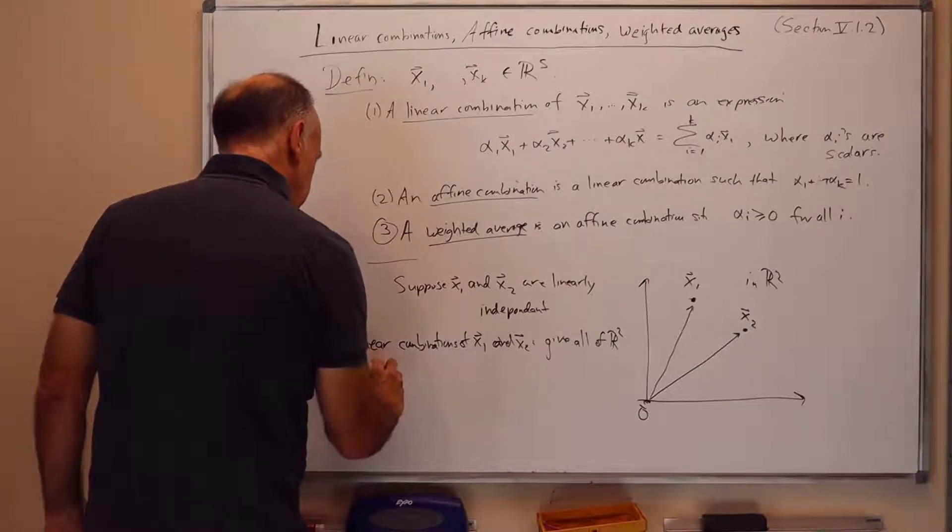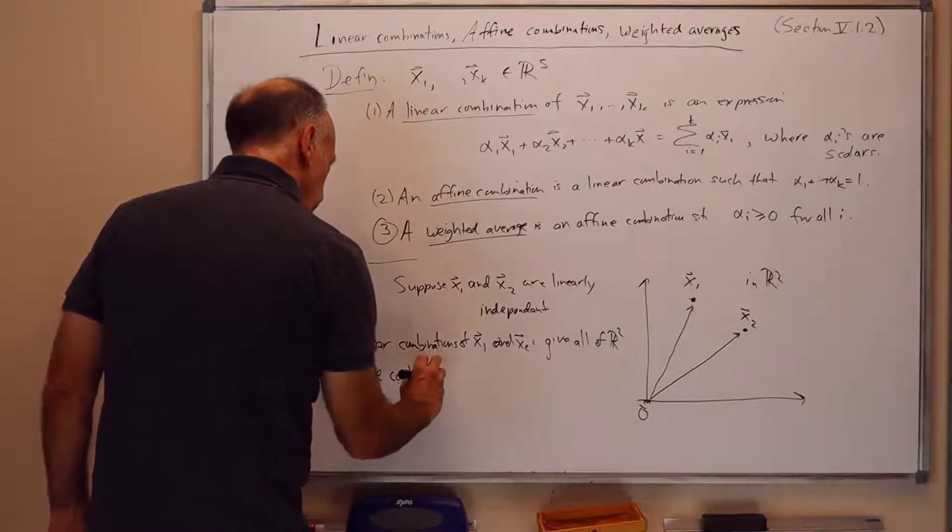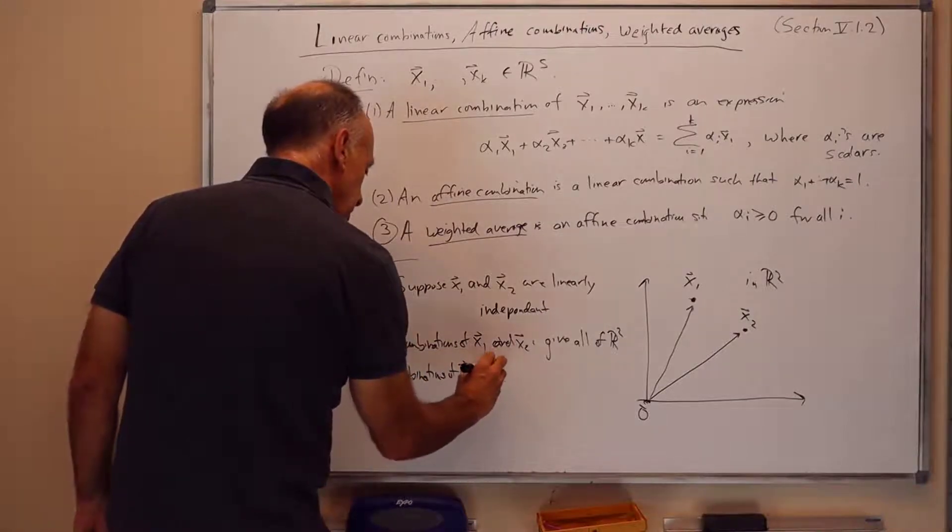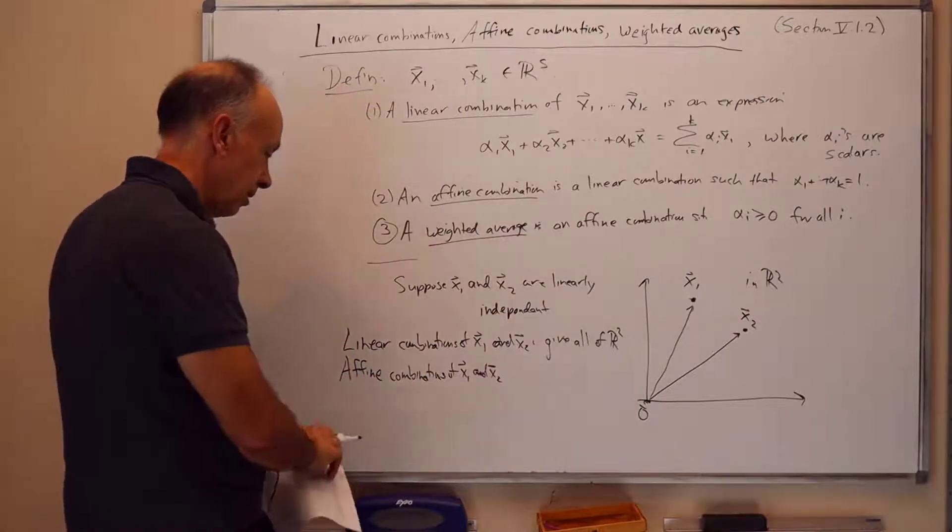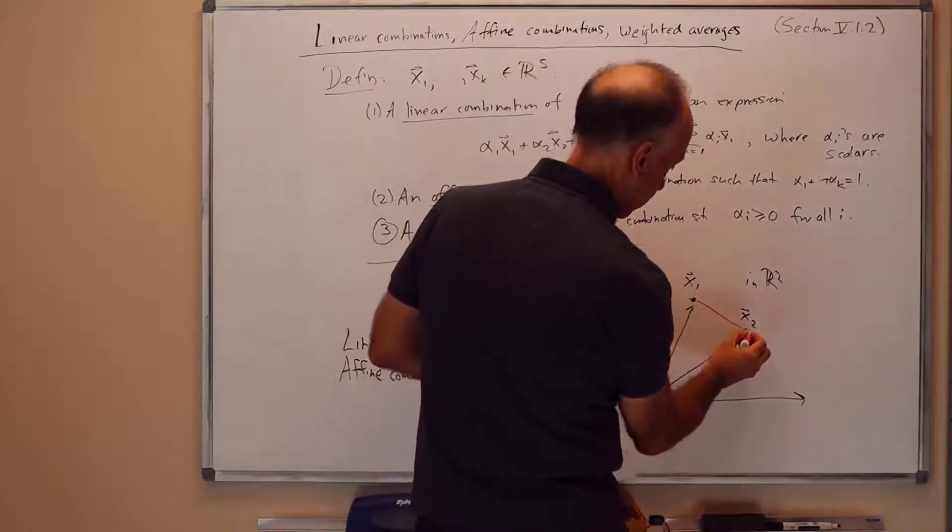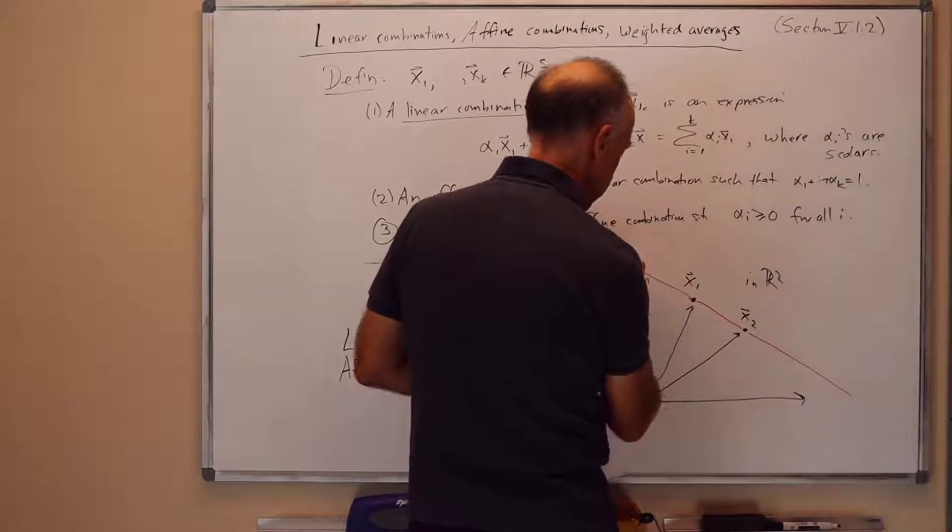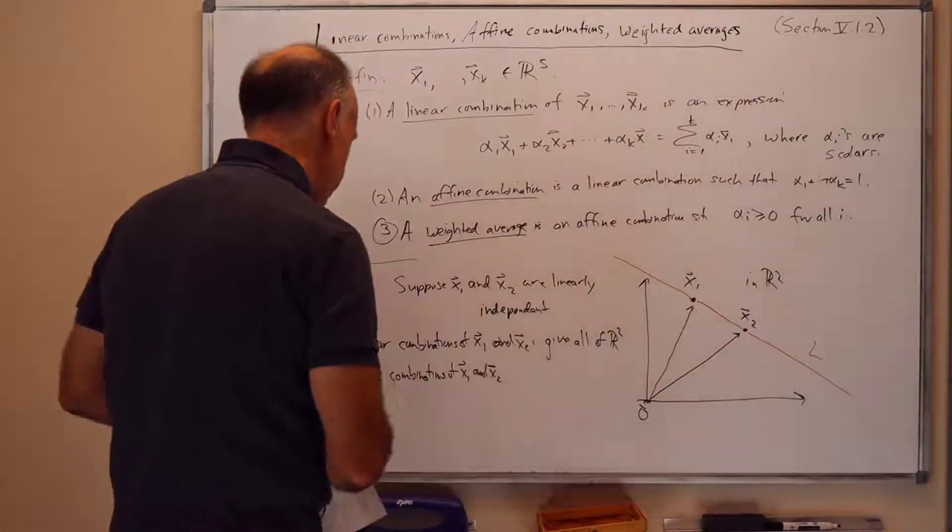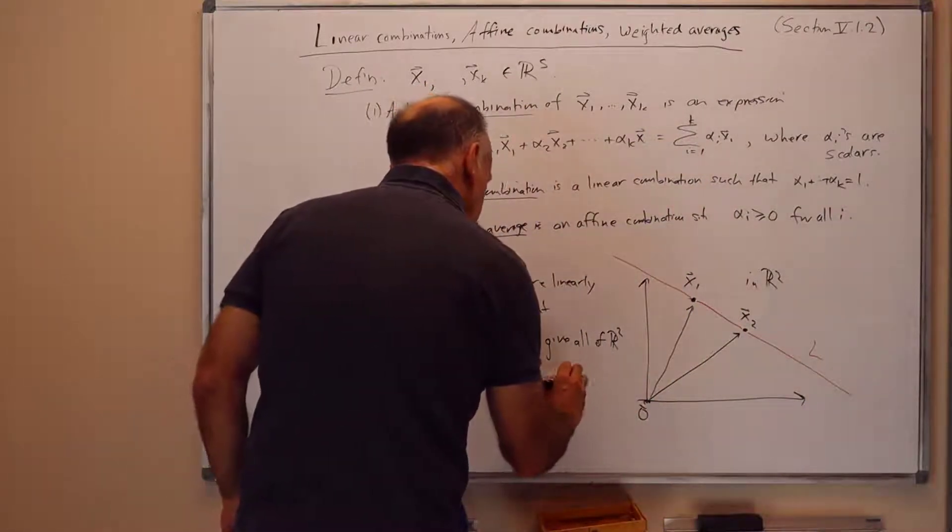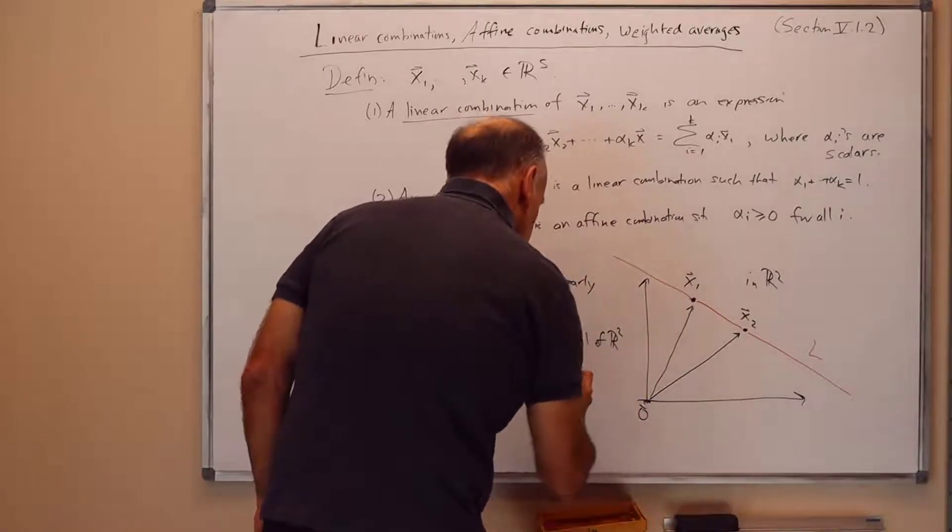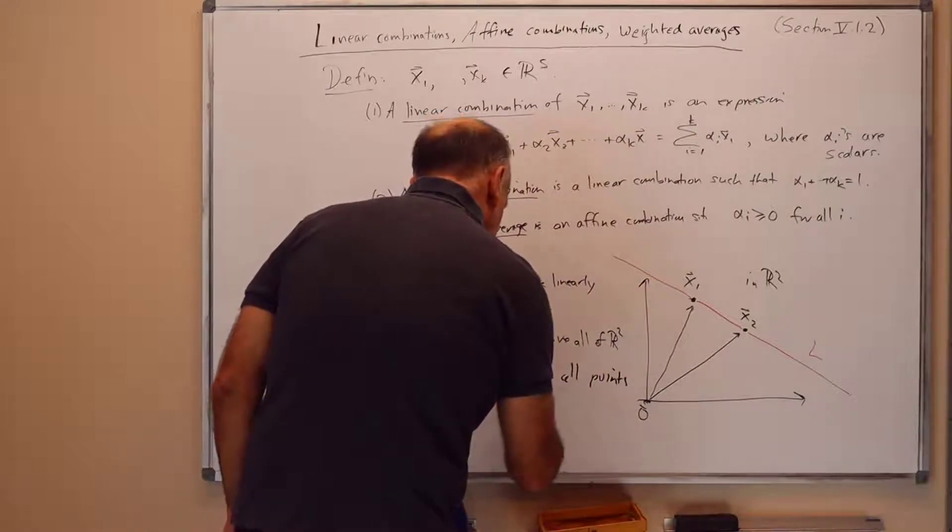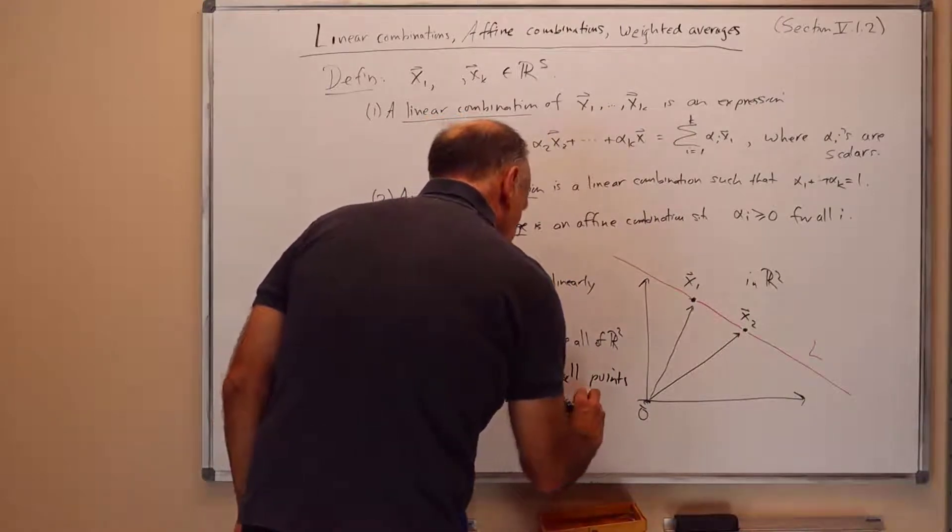Affine combinations of x1 and x2, they give the line containing x1 and x2. So let's draw the line here containing x1 and x2. That's a line L. These give all points on L, on the line L containing x1 and x2.